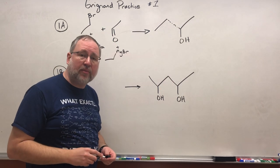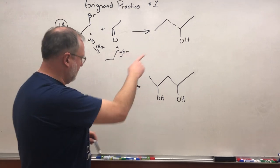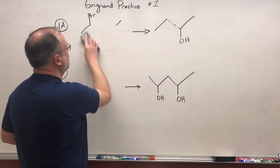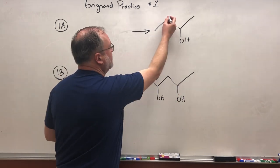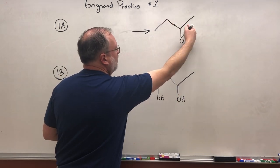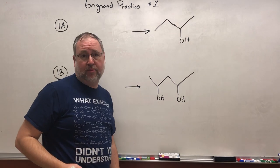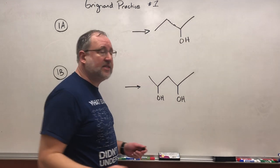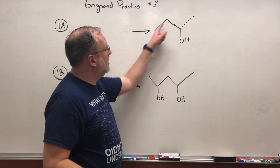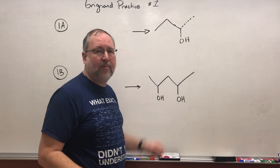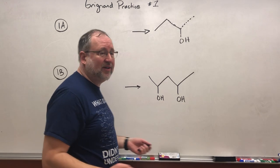There is of course another possibility if we go back to our original compound. What if it wasn't this bond that formed? What if it was actually that bond that formed new? Then we'd have a slightly different set of reactants. If this was the new bond that got formed then this three carbon compound must have been our aldehyde.